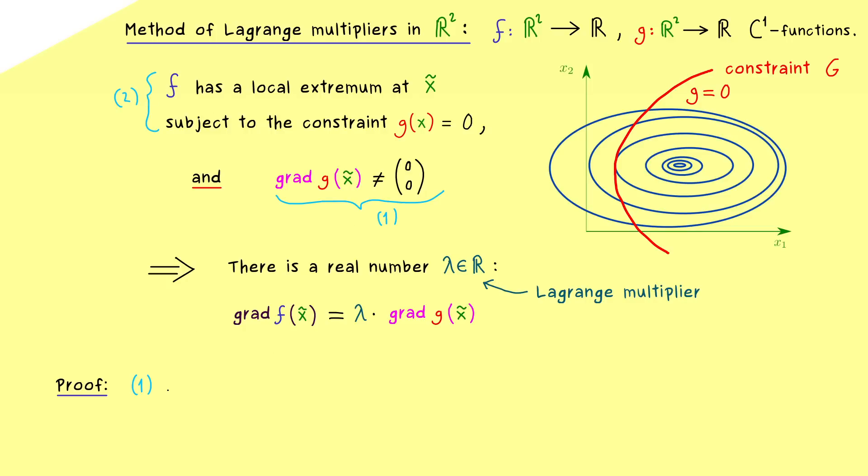So we have two conditions at point x tilde. Condition 1 allows us to apply the implicit function theorem for g. We have g(x₁, x₂) equals 0 and at least one partial derivative of g at this point is not equal to 0. Therefore the implicit function theorem allows us to rewrite this contour line as a graph of a function, at least locally around point x tilde.